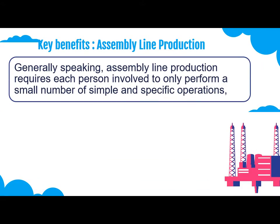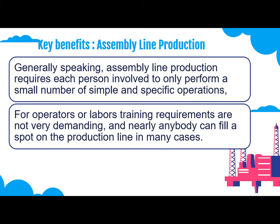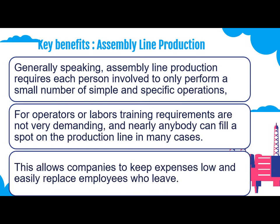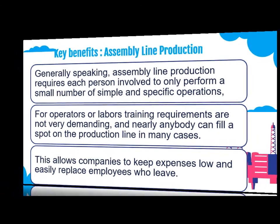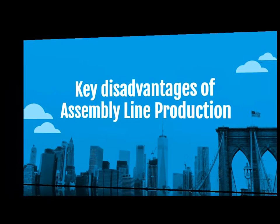Generally speaking, assembly line production requires each person involved to only perform a small number of simple and specific operations. Training requirements for operators or laborers are not very demanding, and nearly anybody can fill a spot on the production line. In many cases, this allows companies to keep expenses low and easily replace employees who leave.